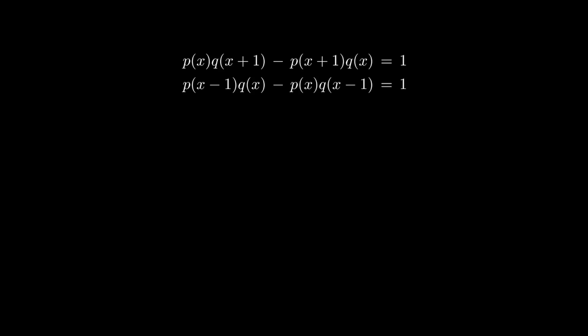Then we can subtract the two equations, and we have a combination of p and q that is equal to 0. We have the equation p(x)(q(x+1) + q(x-1)) - q(x)(p(x+1) + p(x-1)) equals 0.